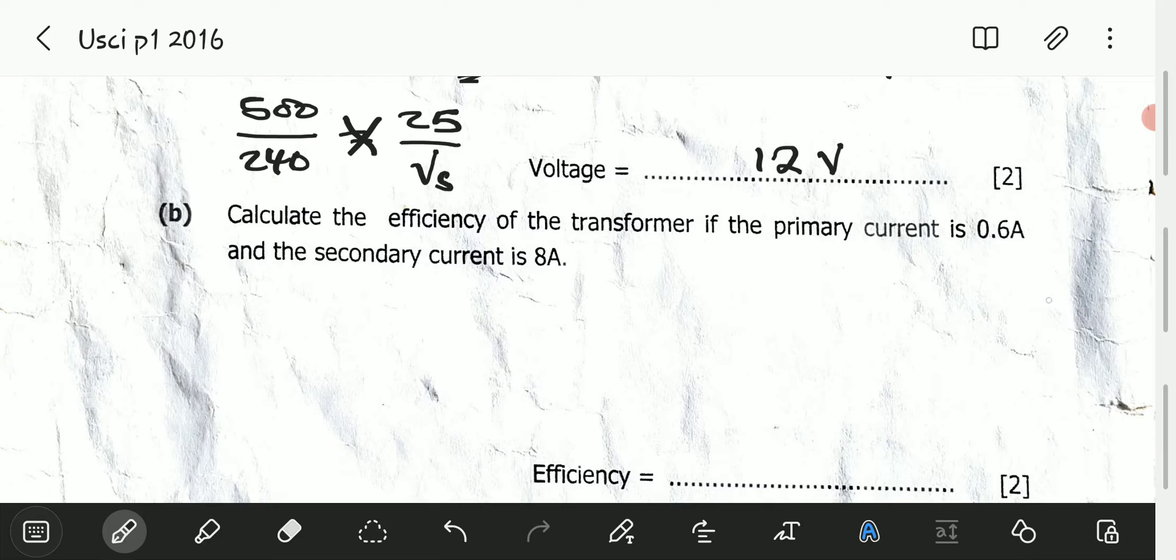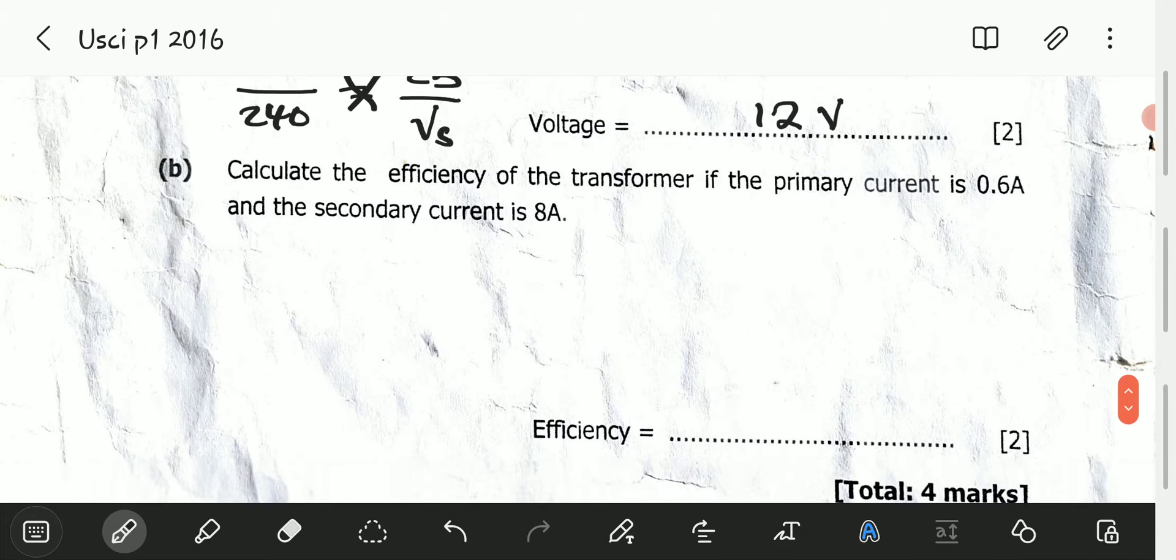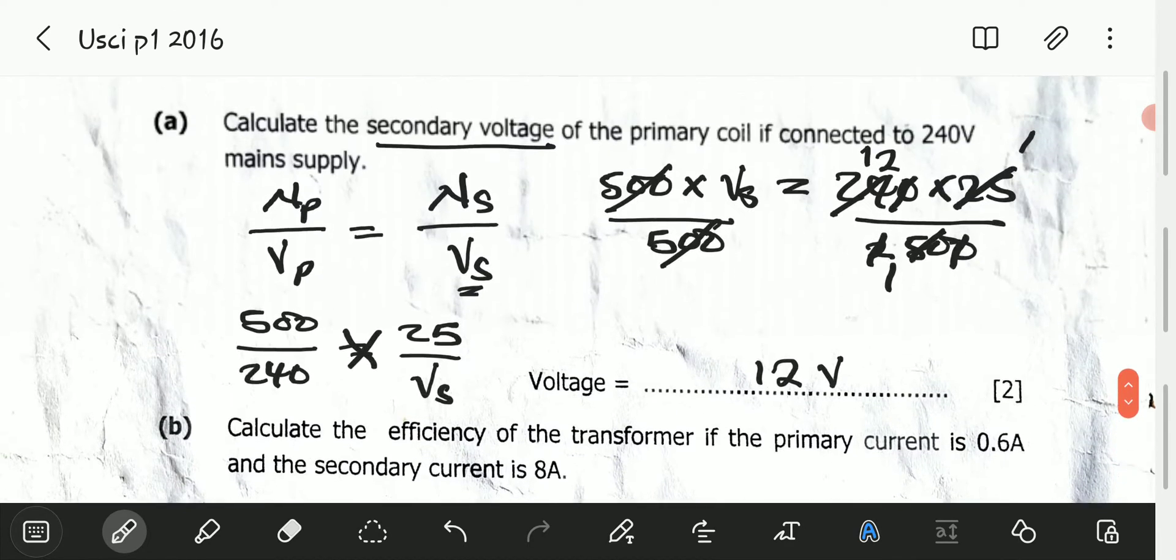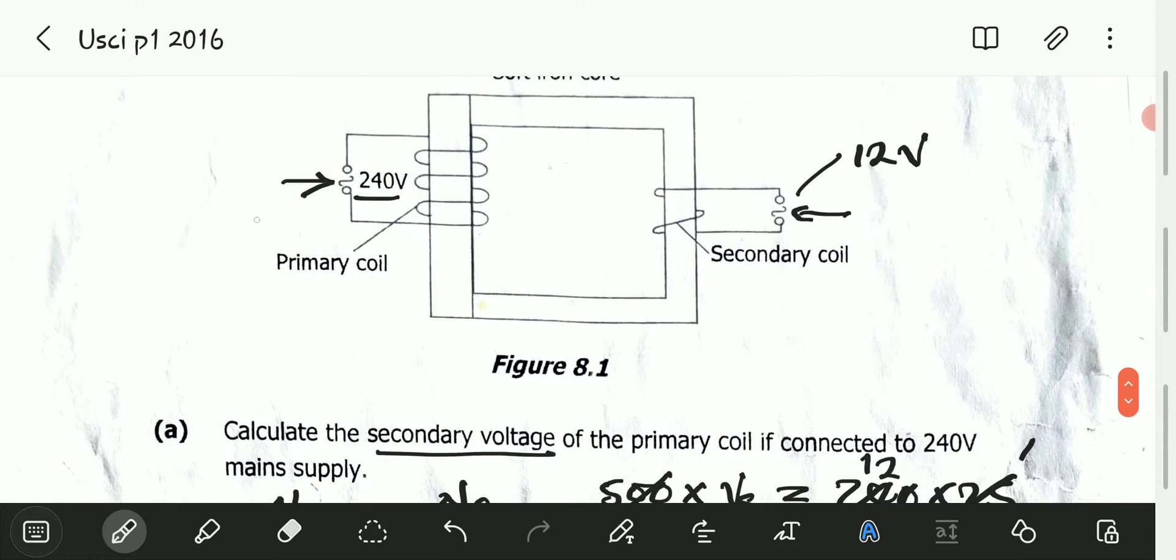Efficiency is all about power, the ratio of the power output to the power input multiplied by 100%. Power input is the power of the primary coil and power output is power of the secondary.